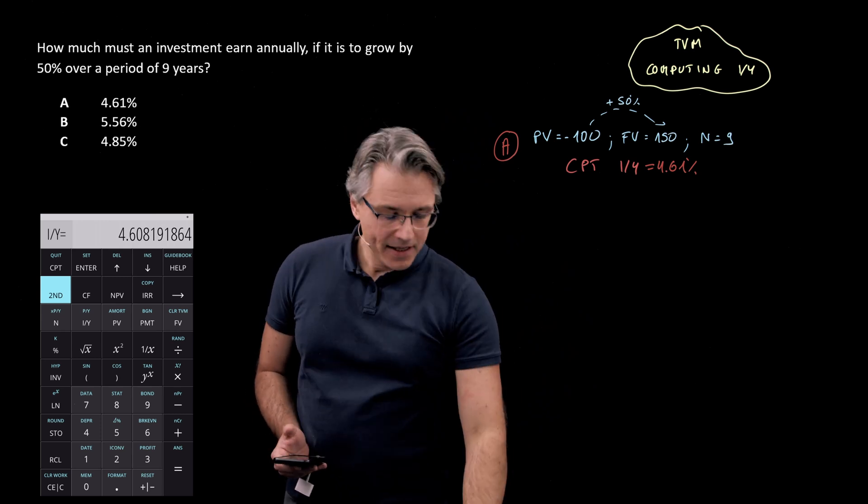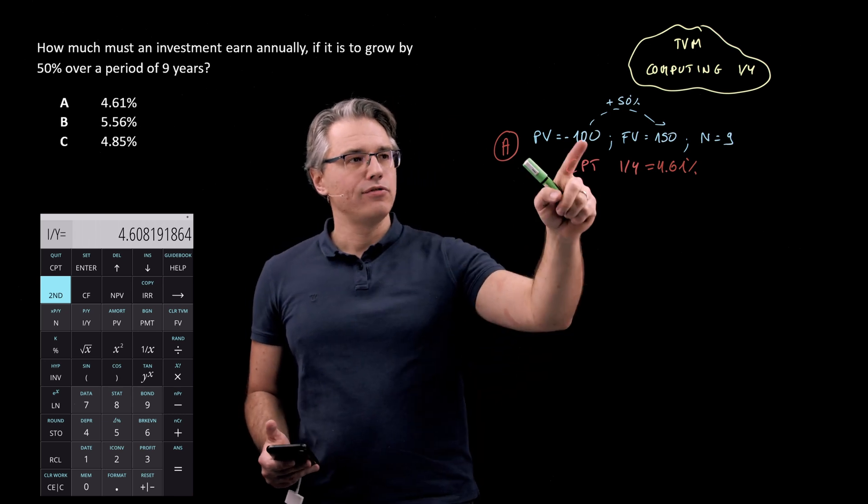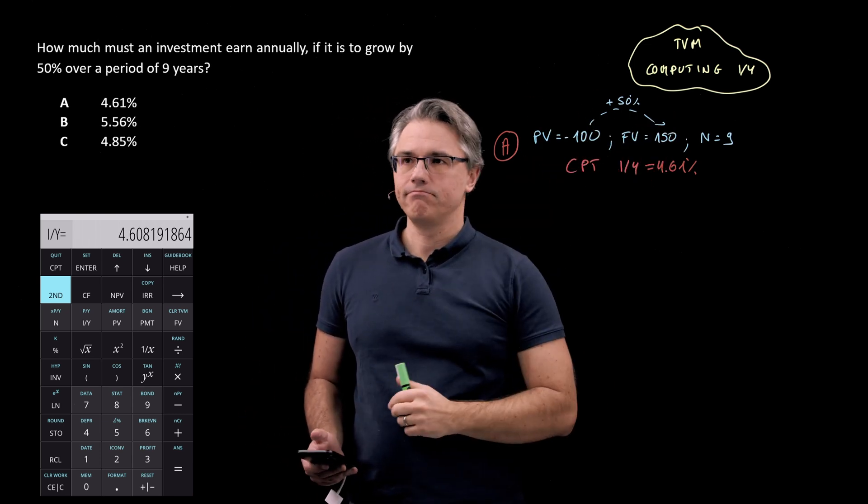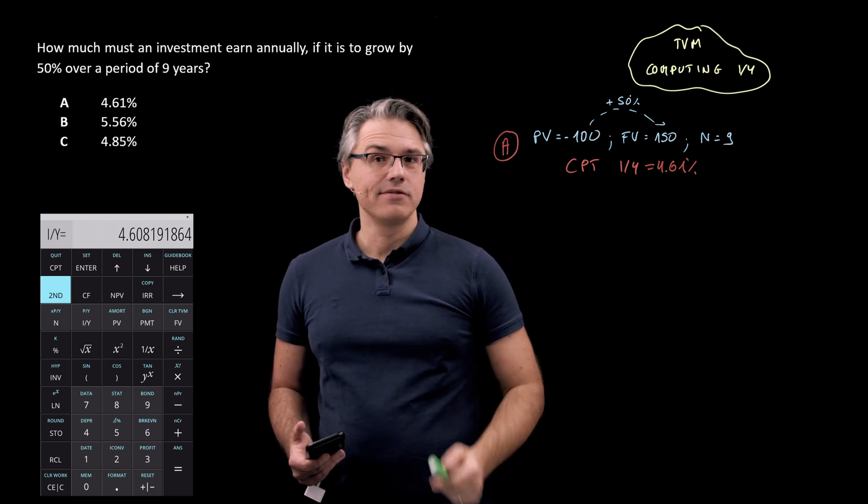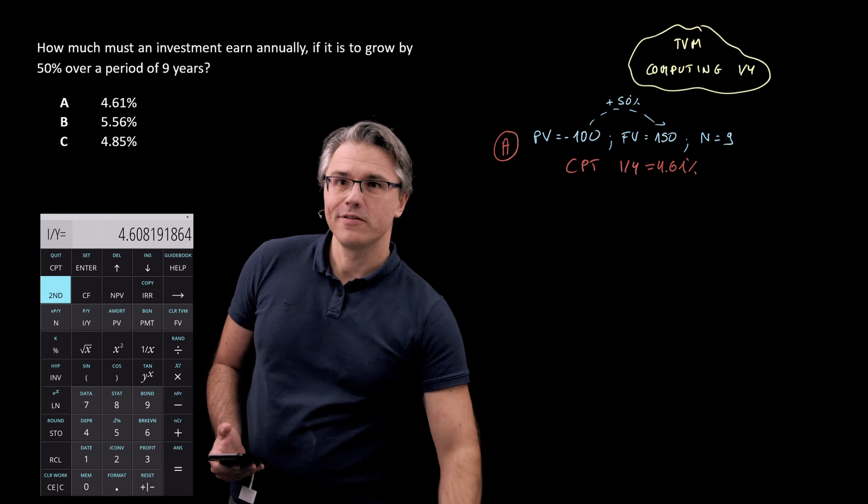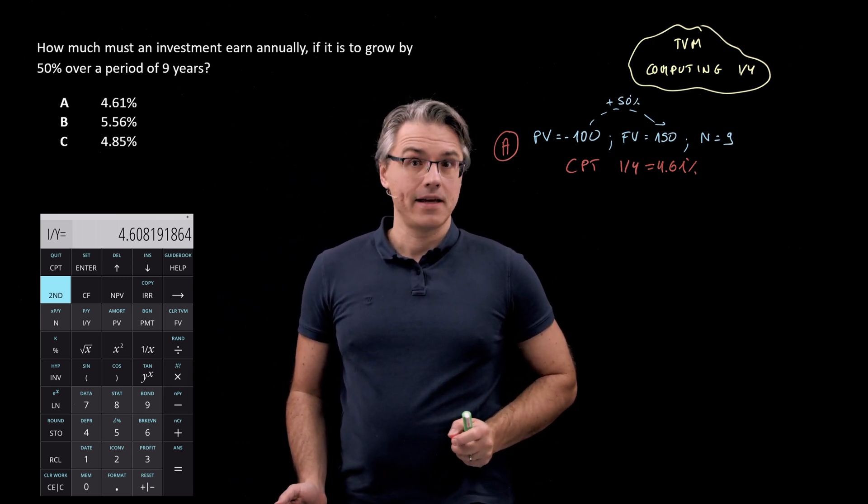Now, it doesn't matter whether you choose 100 and 150 here or maybe 200 and 300, as long as the relationship of 50% more is maintained. That's going to give you the right figure. So be ready for such open questions in the exam where you have to make something up. It's absolutely normal.